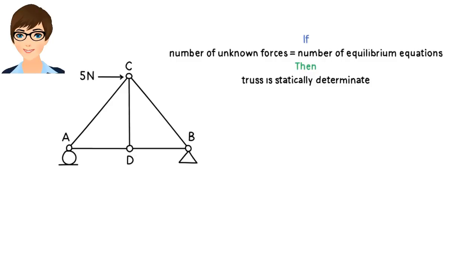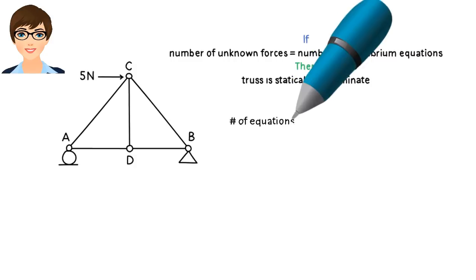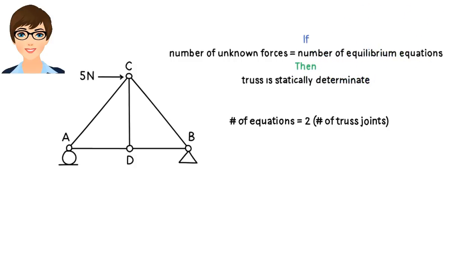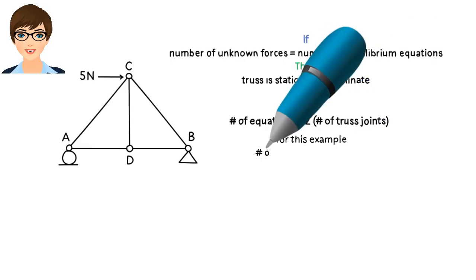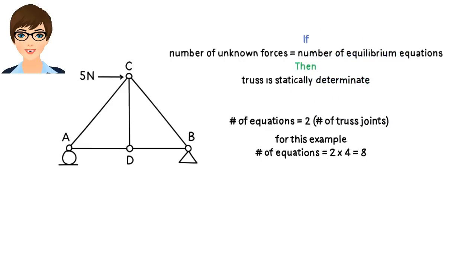How many equilibrium equations can be written for a truss structure? The total number of equilibrium equations equals two times the number of joints in the structure. If the truss has four joints, we can write eight equilibrium equations for it. I will explain why two times the number of joints in a moment — for now, let's just accept it as a fact.